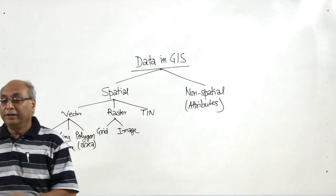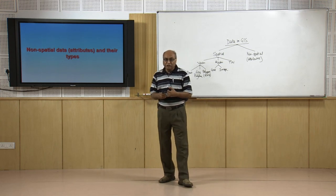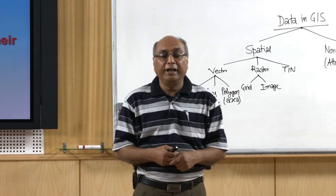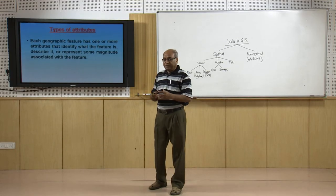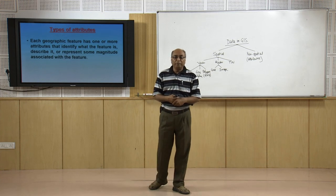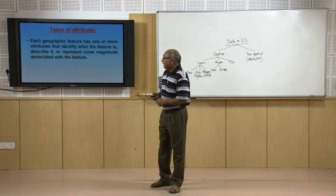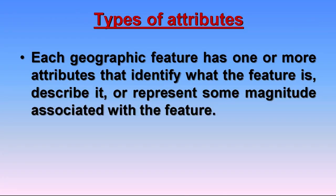Now let us focus on attribute data, which is non-spatial data. With each vector data — whether point, line, or polygon — theoretically we can store n number of attributes. In very simple language we call this tabular data, because it is stored in the form of a table in GIS or in a GIS database. Each geographic feature can have more than one attribute.